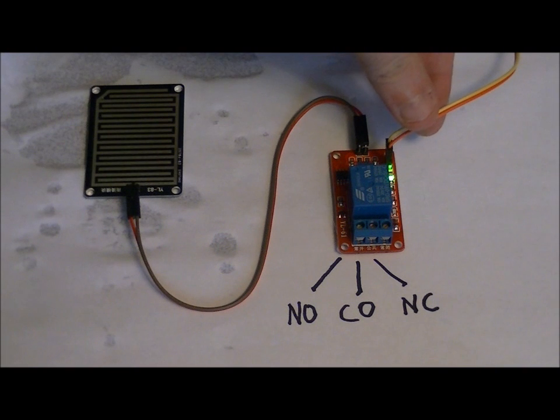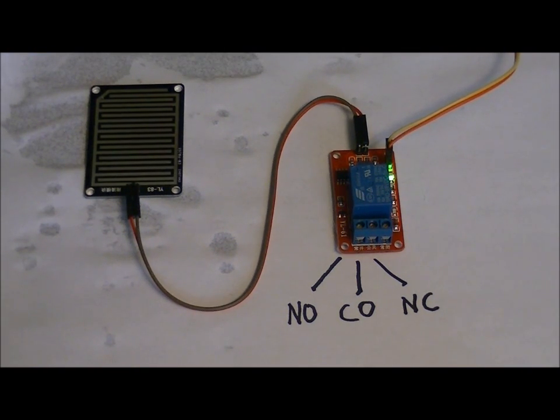The power pins are on the side, labeled on the board VCC and GND. VCC is your five-volt line. GND is your ground line.